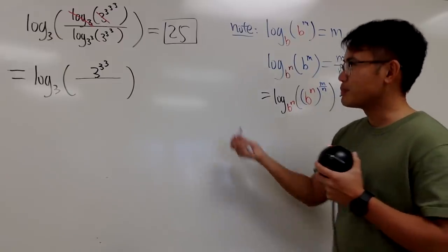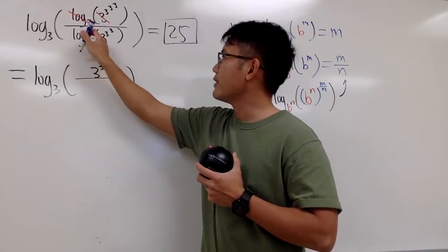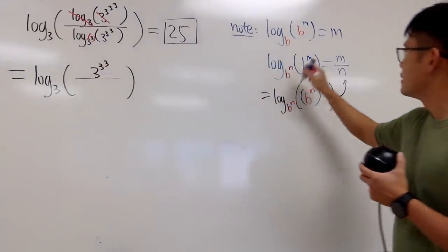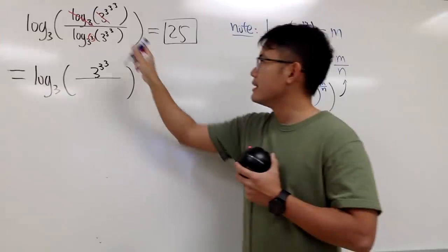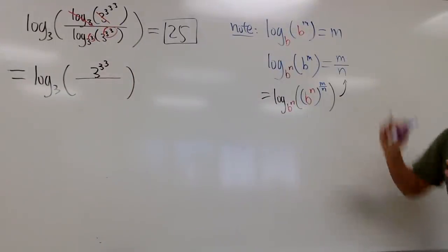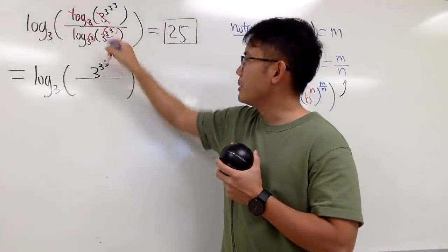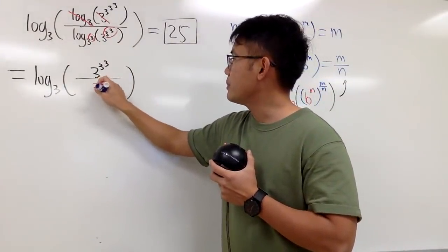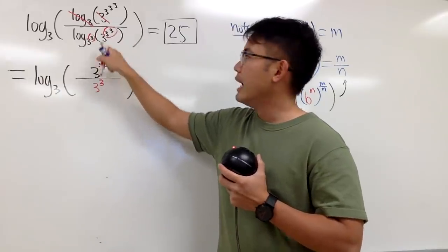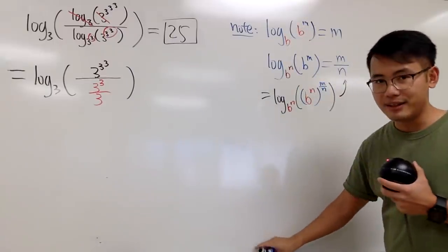And just pay attention right here. This is like the n that we have right here, right? And then, this right here is like our m, right? So, what I'm going to do is, it's going to be 3 to the third power for the n, and then over this n, which is the 3. So that's pretty much the idea.